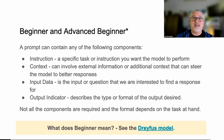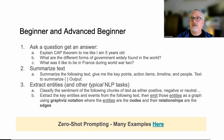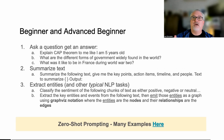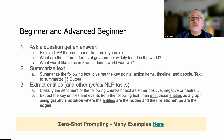Of which there are many, many now out in the wild. So this is what a beginner and advanced beginner looks like. Here are some examples of what they might be doing: 'explain something to me' - that's a zero shot prompt. For example, 'explain what are the different forms of government widely found around the world,' or 'what was it like to be in France during World War Two?' Those are zero shot prompts.